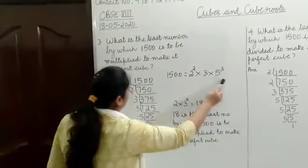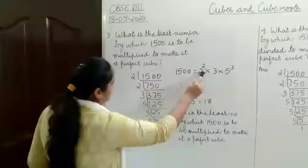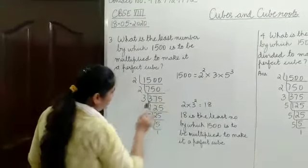So 1500 will be expressed as 2 squared into 3 into 5 cubed. That's 2² × 3 × 5³.